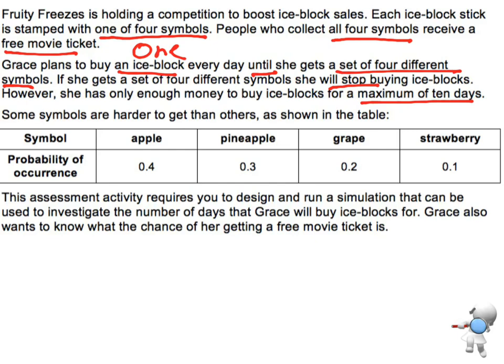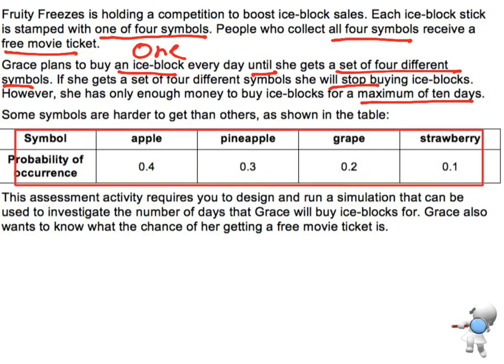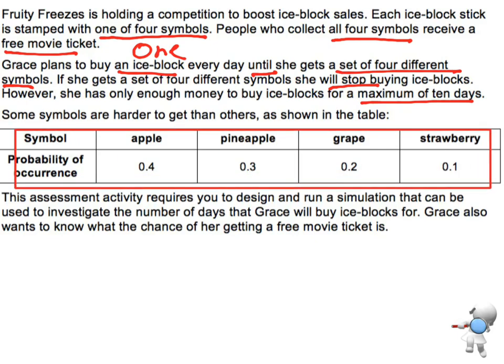In our table down here we've got our different allocations. It tells us the chance of getting the apple symbol is 0.4, pineapple is 0.3, grape is 0.2, and strawberry is 0.1.